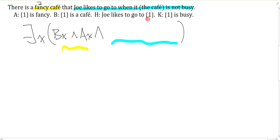Joe likes to go to that which is of course X to make it the fancy cafe. I have to say when it's not busy. So if it's not busy then Joe likes to go to it. This is an example where the property itself can be a connective. The property is conditional. I'll put this property in a bracket or parentheses. So I say if the cafe is not busy then Joe likes to go to it.